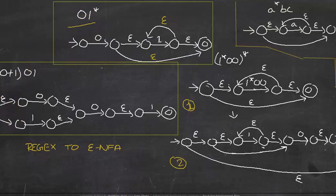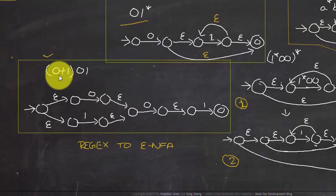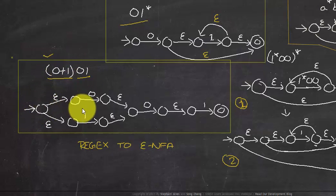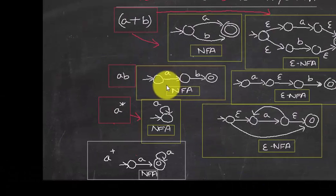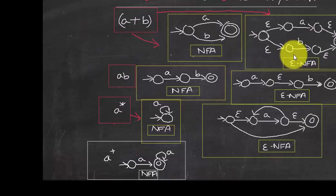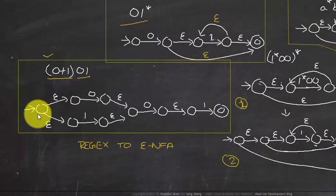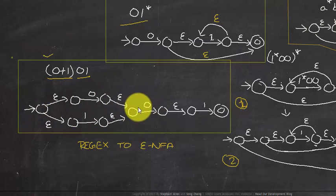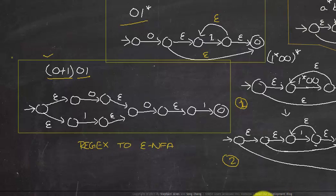Next example: (0|1)01. This has a union operation followed by concatenation. For the union operation, we have epsilon transitions both ways at the beginning and at the end, giving two possible paths — one through 0 and one through 1. Then the concatenation rule applies: 0, epsilon, 1.